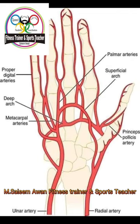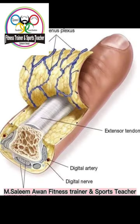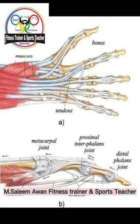The first bone in the proximal row, which is a boat-shaped bone, is called the scaphoid. Next to the scaphoid is the lunate — lunate means it is half-moon-like. Next to the lunate is the triquetrum. The bone which is present over the triquetrum is the pisiform, which is a sesamoid bone present within the tendon of flexor carpi ulnaris.